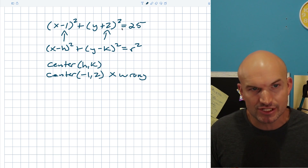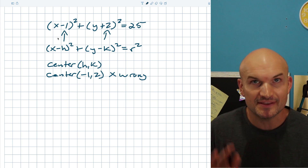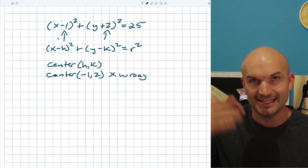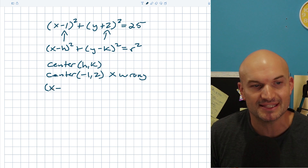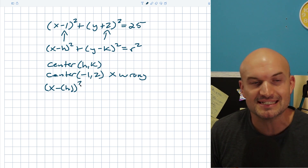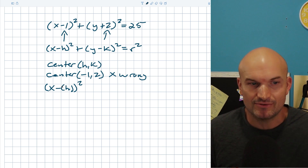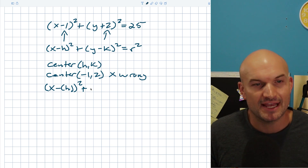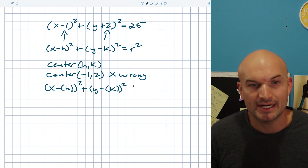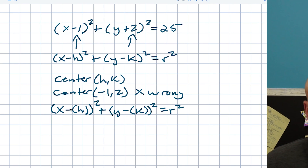What we need to understand is we want to be able to write this equation in this format. The best way to understand this is to use an extra set of parentheses. Think about this as x minus parentheses-h, quantity squared. I'm using these extra grouping symbols around h just to create h as its own value — they're not changing the problem, but you'll see why this is important. Then I'm going to have plus y minus parentheses-k, quantity squared, equals r squared. I want to rewrite this equation in the form x minus (h), y minus (k).